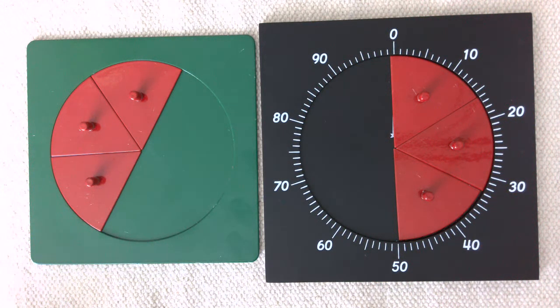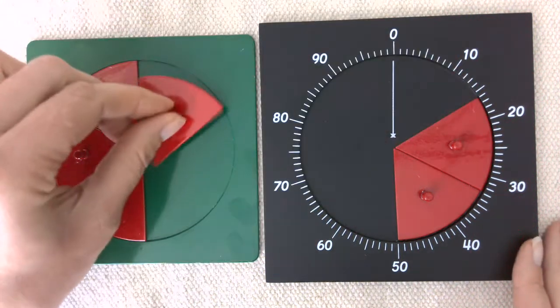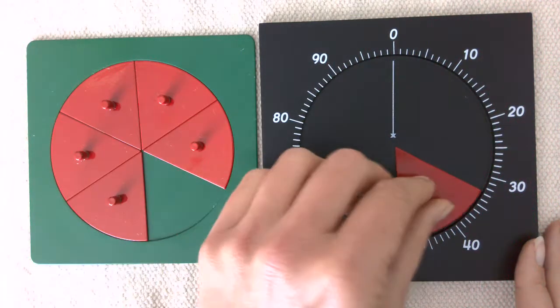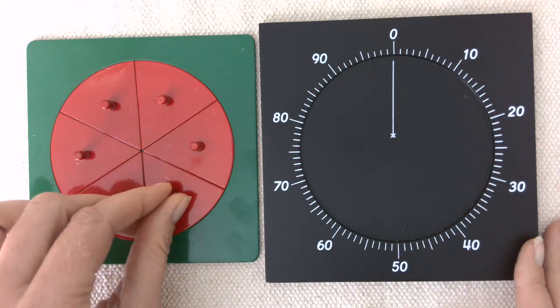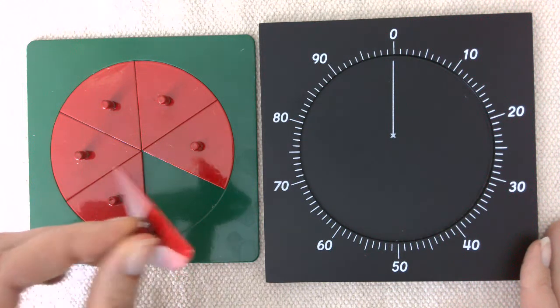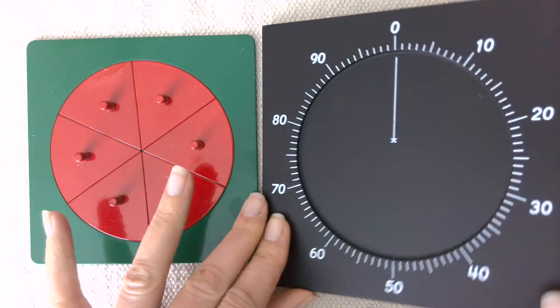All right, so the centesimal frame can be used with all of the different fraction pieces. And I should say my fraction pieces are metal and they're really thin, and this particular centesimal frame I have is wood, so it doesn't always line up perfectly.